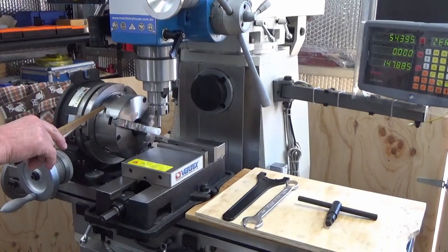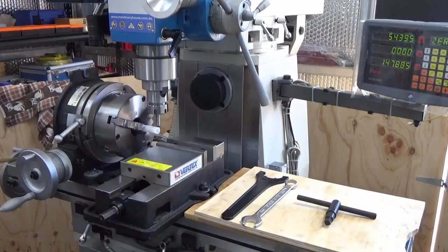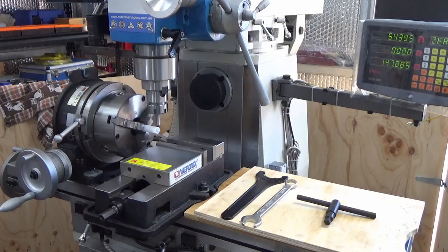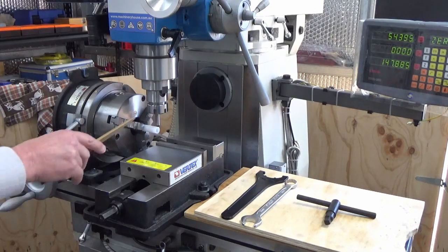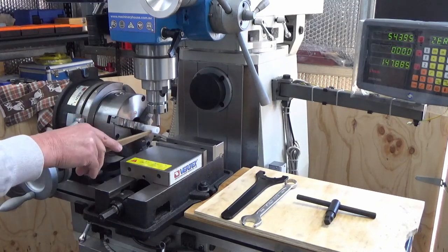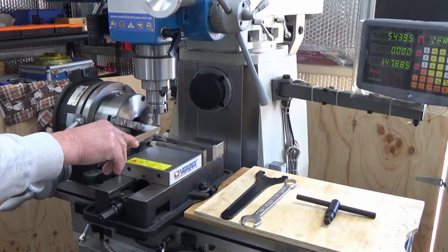So on the mill we've got the rotary table set up that's been squared up to the actual mill itself, and what we're going to do now is find the center.